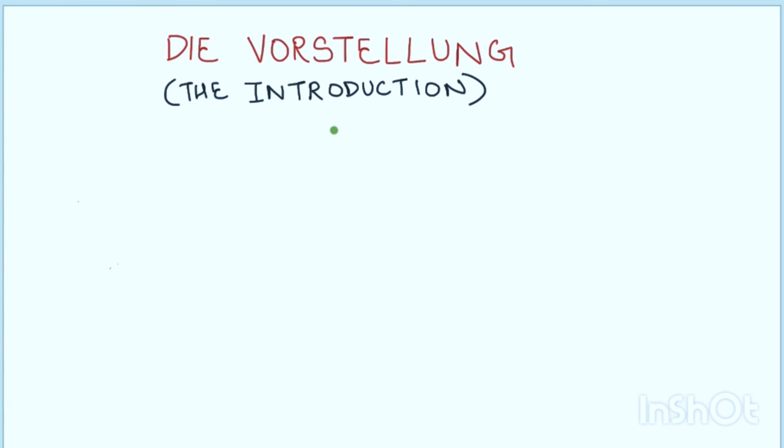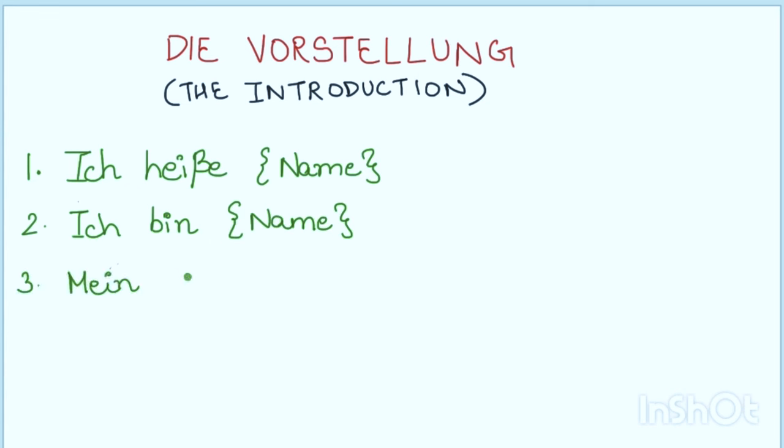Now, there are three ways to introduce yourself in German. First, I will first write all the ways and then I will explain them. Ich heiße and your name. Ich bin and your name. And last, mein Name ist and your name. Okay, so all of these sentences mean the same thing.